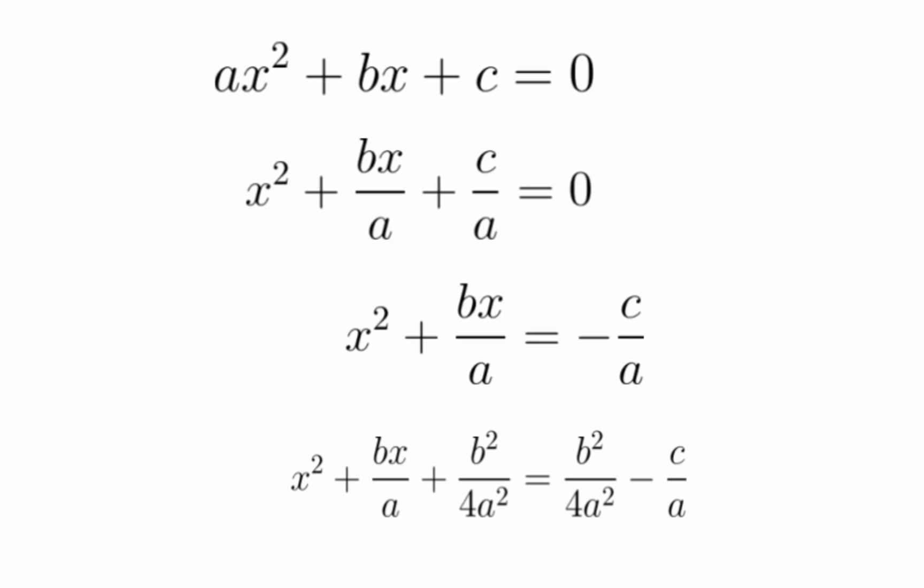And we already have the x squared on our equation. We'll just let bx over a, because it's already there, be the 2xy term. And we'll find y by just dividing by 2x. And as you see here, y should be b over 2a.